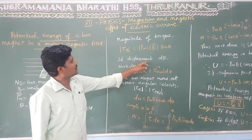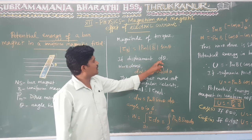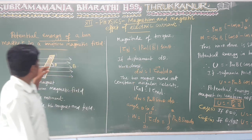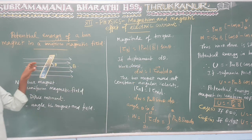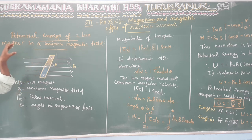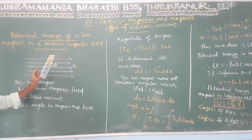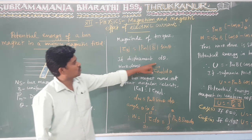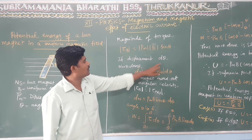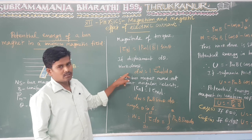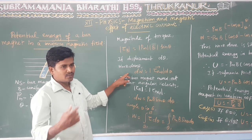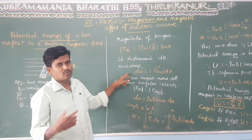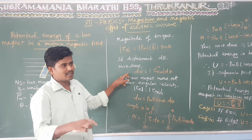If the displacement is d theta — suppose we do not have a magnetic field and then we place the magnet in the field at a small angle theta — it will rotate. Then there is work done; the magnetic field is doing some work on the magnet.